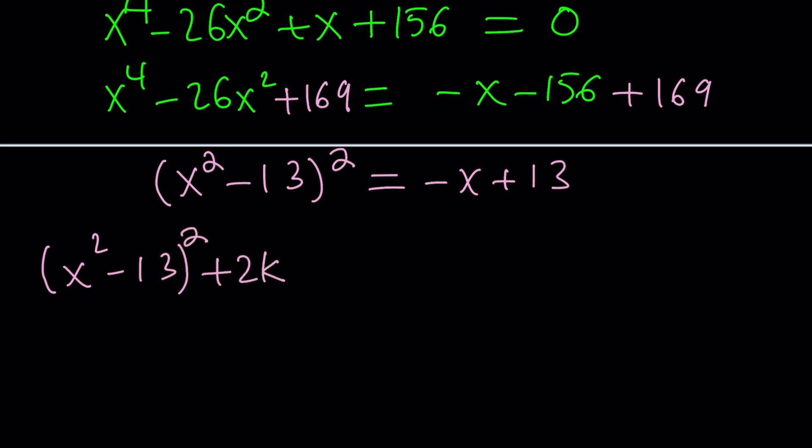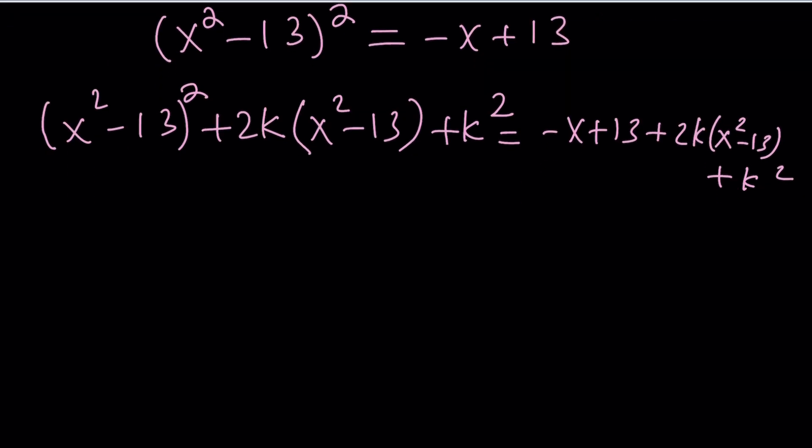And we can do that by adding 2k multiplied by x squared minus 13 plus k squared, which still makes the left-hand side a perfect square. And on the right-hand side, we're going to have negative x plus 13 plus the 2k times x squared minus 13 and then plus k squared. Now, what is the left-hand side? I said that it's still a perfect square. Yes, it is. Because now if you look at it carefully, this is x squared minus 13 plus k quantity squared.